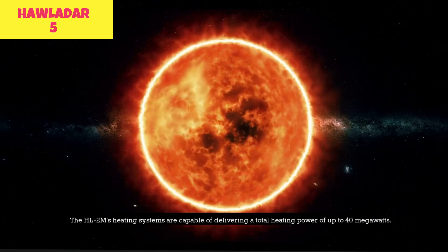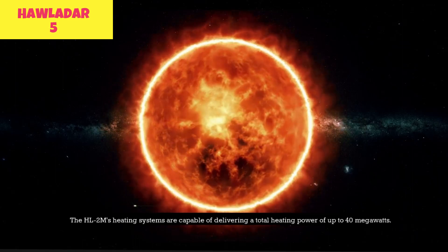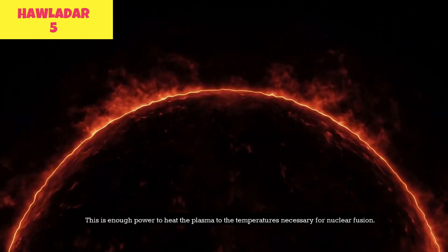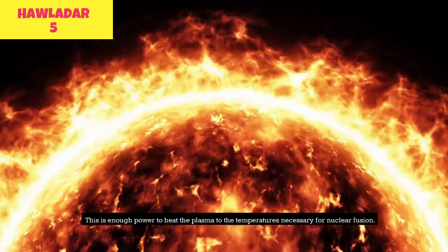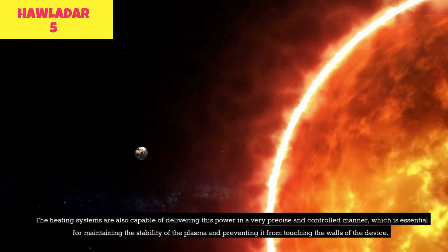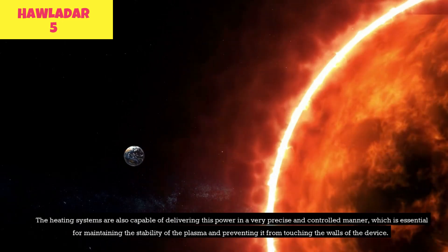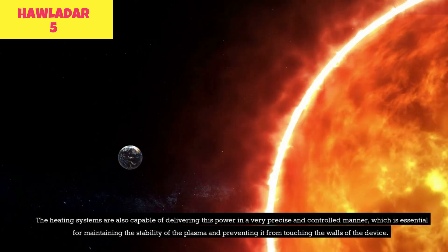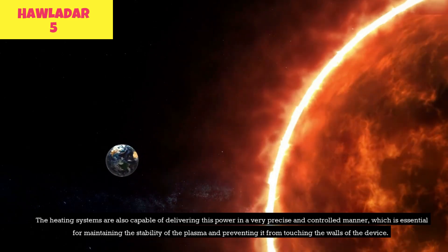The HL2M's heating systems are capable of delivering a total heating power of up to 40 megawatts. This is enough power to heat the plasma to the temperatures necessary for nuclear fusion. The heating systems are also capable of delivering this power in a very precise and controlled manner, which is essential for maintaining the stability of the plasma and preventing it from touching the walls of the device.